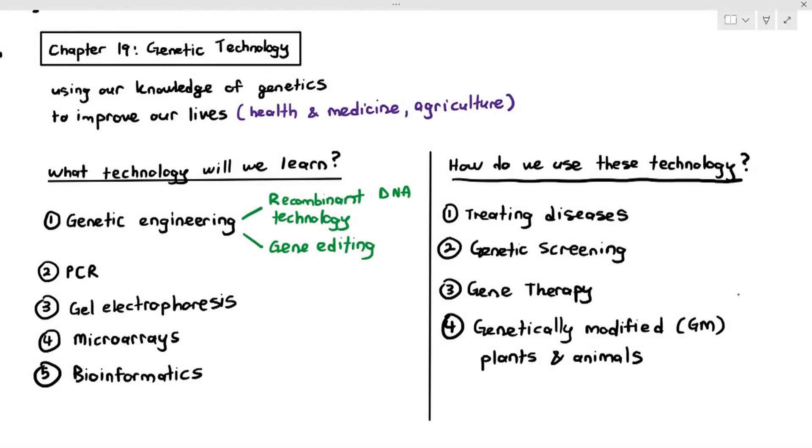If you remember, I told you that genetic engineering can be done in two ways. It could be done using recombinant DNA technology. We've covered that in the previous videos. And now we are going to be talking about the second way in which genetic engineering can be done, and that is known as gene editing.